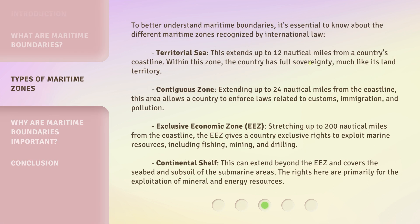To better understand maritime boundaries, it's essential to know about the different maritime zones recognized by international law. Territorial Sea: this extends up to 12 nautical miles from a country's coastline, and within this zone the country has full sovereignty, much like its land territory. Contiguous Zone: extending up to 24 nautical miles from the coastline, this area allows a country to enforce laws related to customs, immigration, and pollution. Exclusive Economic Zone (EEZ): stretching up to 200 nautical miles from the coastline, the EEZ gives a country exclusive rights to exploit marine resources, including fishing, mining, and drilling. Continental Shelf: this can extend beyond the EEZ and covers the seabed and subsoil of the submarine areas, with rights primarily for the exploitation of mineral and energy resources.